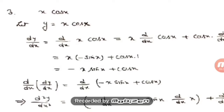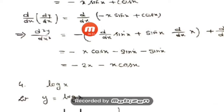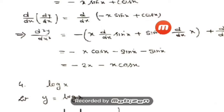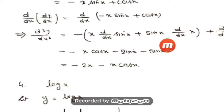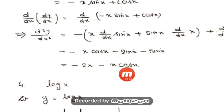Now differentiate dy/dx again to get the second order derivative: d/dx of (−x·sin x + cos x). Using the product rule on −x·sin x: take −1 outside, then x·d/dx(sin x) + sin x·d/dx(x) = x·cos x + sin x·1. Plus d/dx(cos x) = −sin x. So d²y/dx² = −(x·cos x + sin x) − sin x = −x·cos x − 2·sin x.